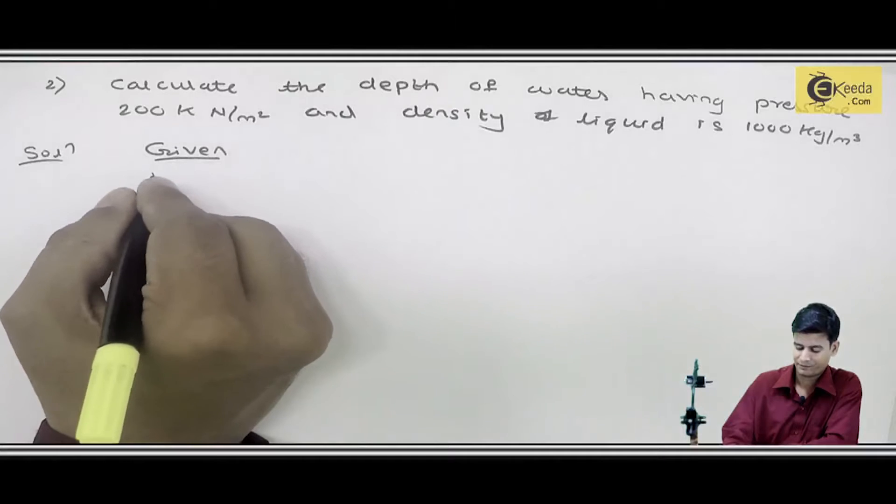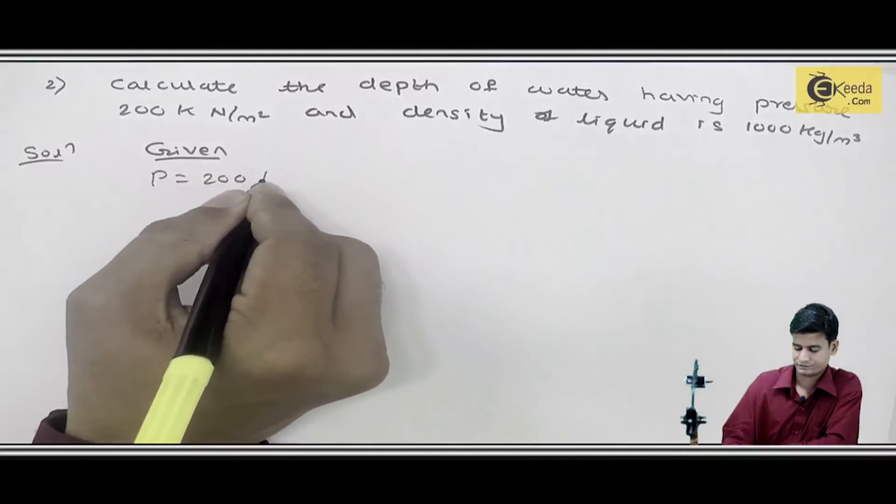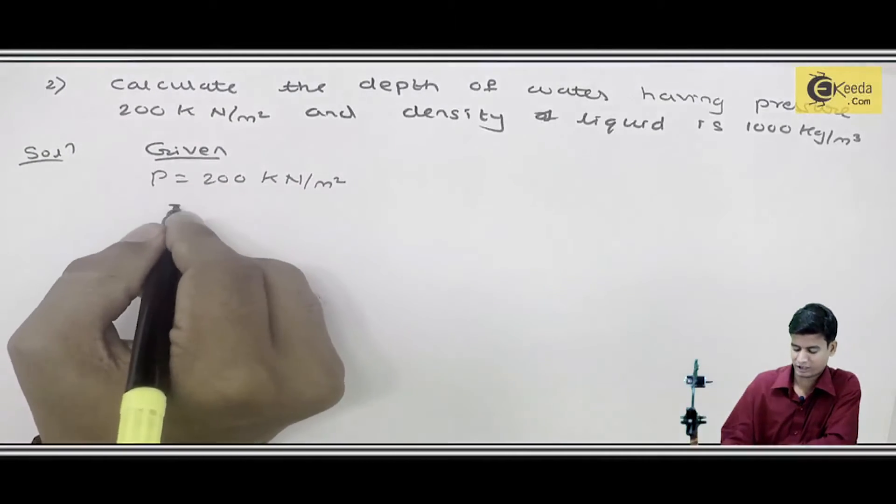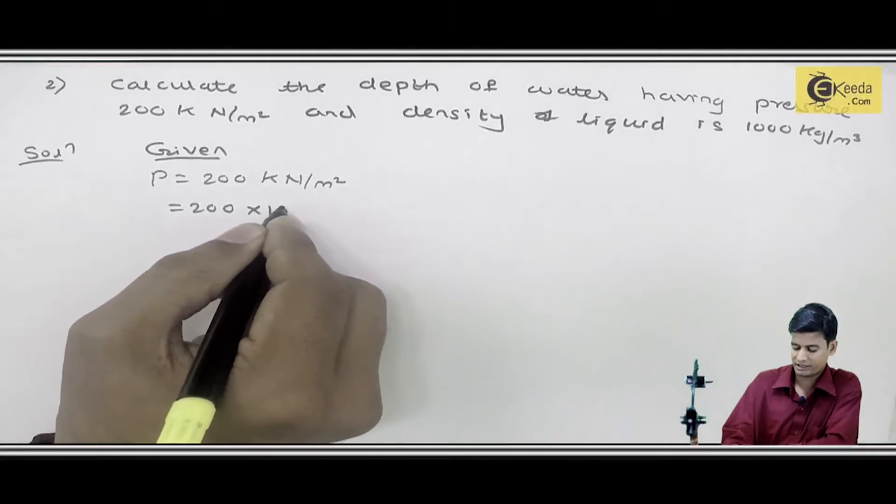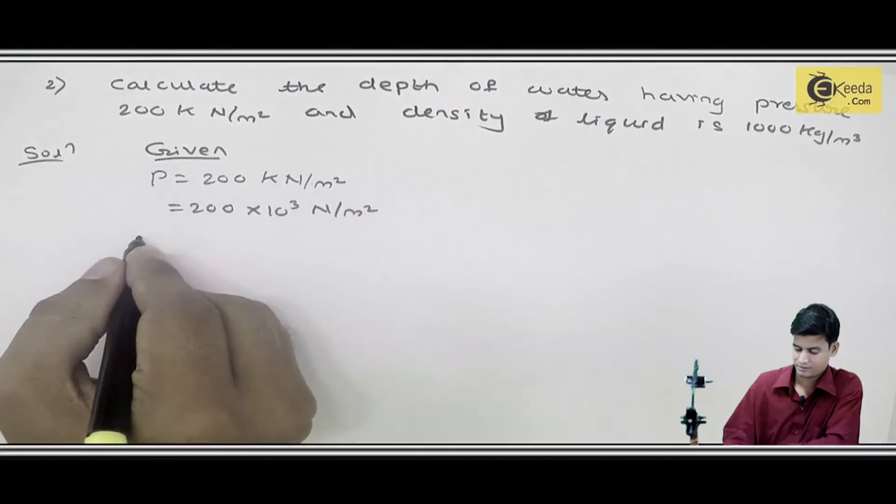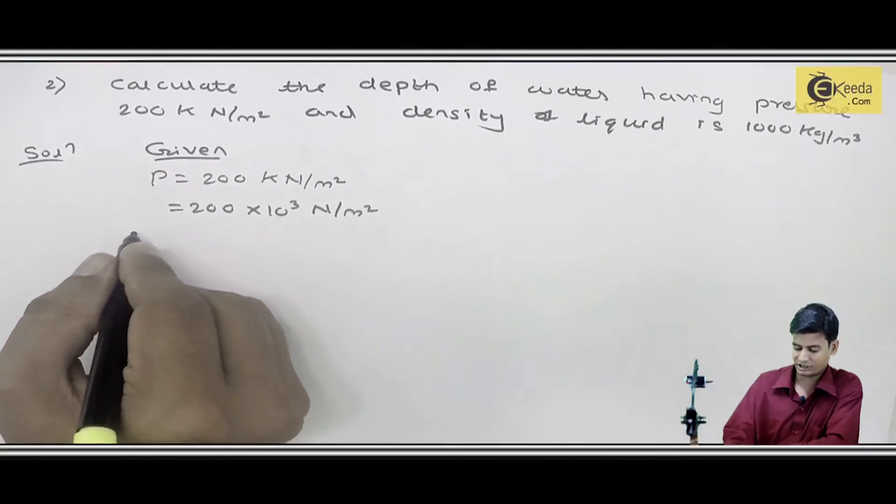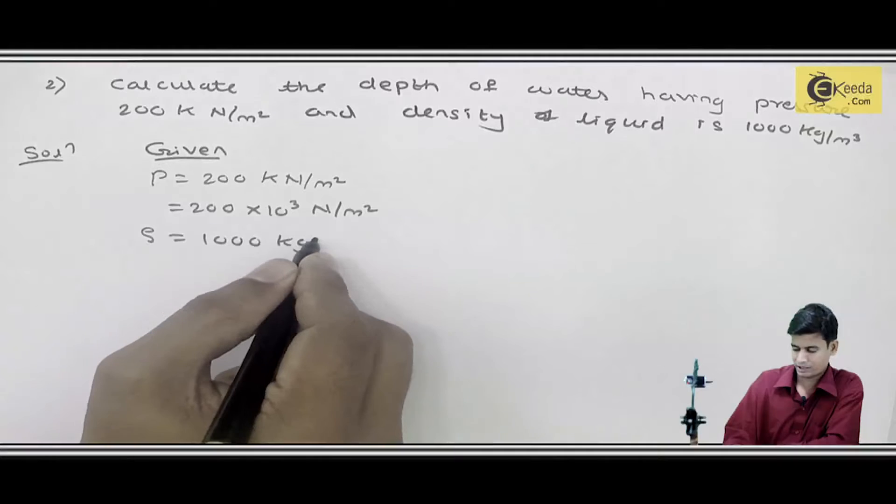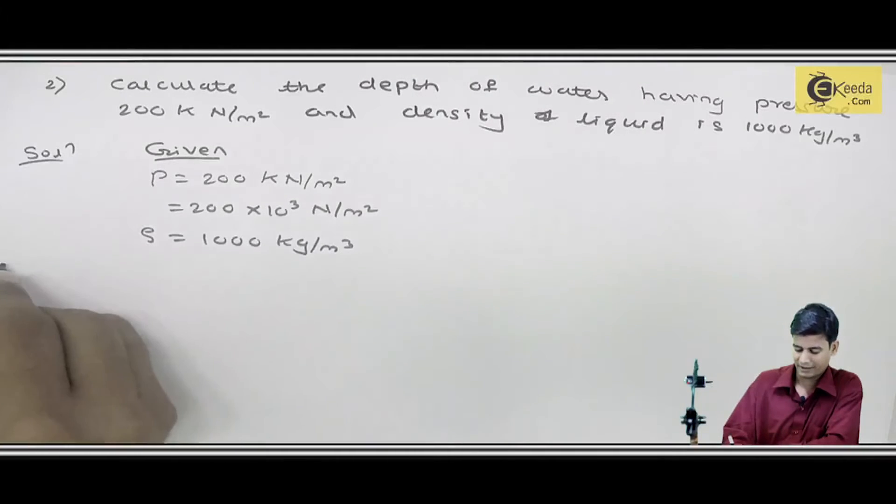Pressure is 200 kilonewton per meter square, which converts to 200×10³ newton per meter square. Next, density of liquid, ρ = 1000 kilogram per meter cube.